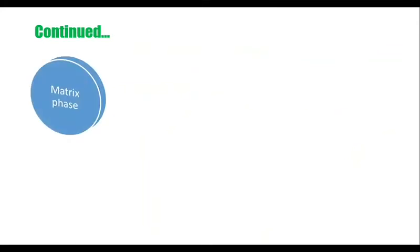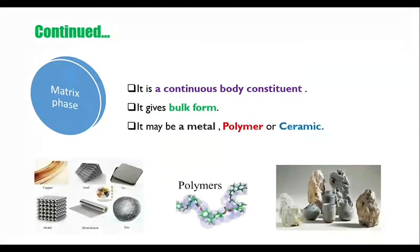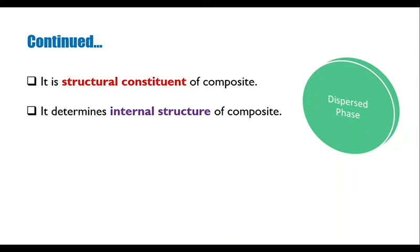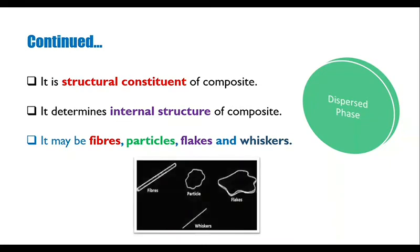The matrix phase is a continuous body constituent. It gives bulk form. It may be a metal, polymer, or ceramic. The dispersal phase is a structural constituent of composite. It determines internal structure of composite. It may be fibers, particles, flakes, and whiskers. You can see the structures of different dispersal phases like fibers, particles, flakes, and whiskers.